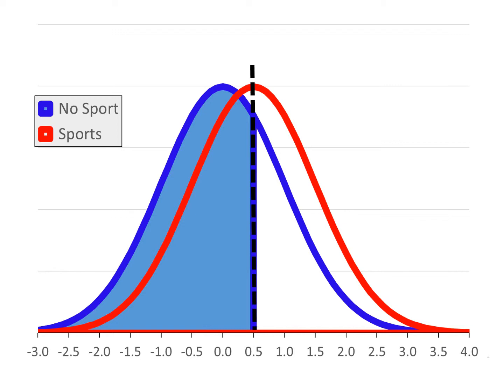How do we do that? Our z-scores at the bottom were based on the no sports students, and the mean for students involved in sports was equal to a z of 0.50 — our effect size. So the question is simply: what's the area of the distribution that falls below a z of 0.50? We can look that up in a table or use Excel and find that it is 0.6915, or 69.15%.